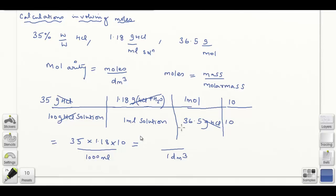I forgot the 36.5 in the denominator. When I multiply these numbers and divide by 36.5, I get approximately 11.2. I missed the moles unit, so the answer is 11.2 moles per decimeter cubed. In the next video, we'll see how to make a dilution of two molar hydrochloric acid from this one. Thank you for watching.